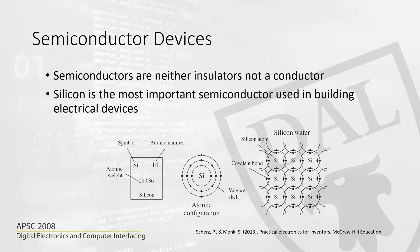We have talked about semiconductors in the previous module, however we will try to dig deeper in this module. Semiconductor devices are neither insulators nor conductors. Silicon is one of the most important semiconductor materials, often used for building electronic components. Other semiconductor materials such as germanium and selenium also exist.